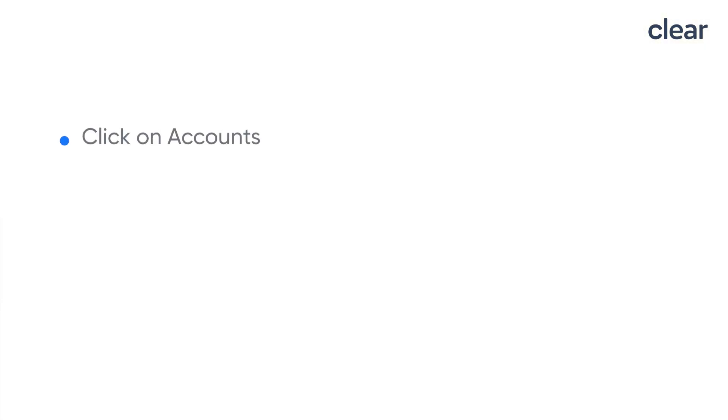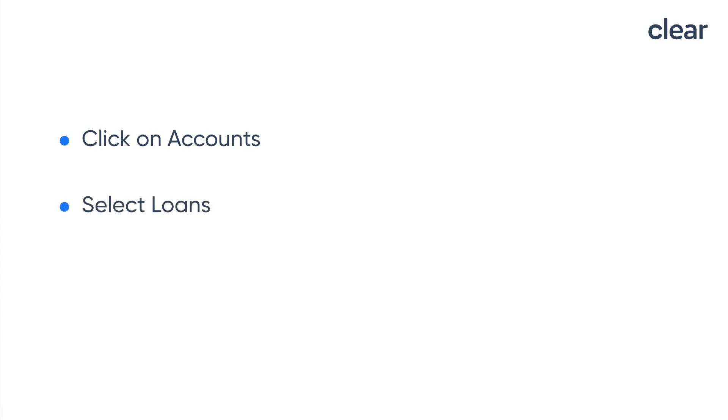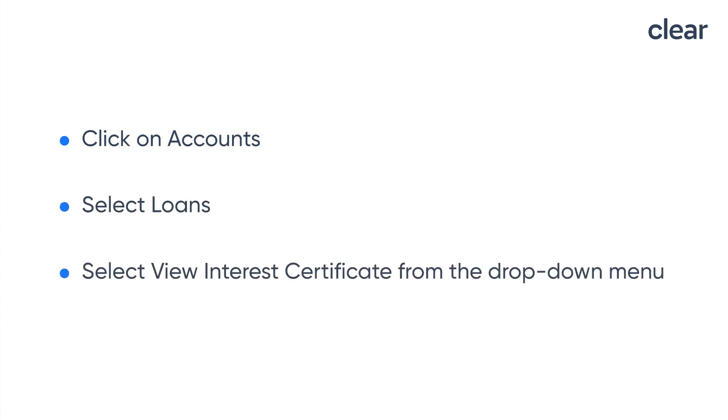Let us now see how to download an Axis Bank interest certificate. Click on accounts, select loans, and select view interest certificate from the drop-down menu.